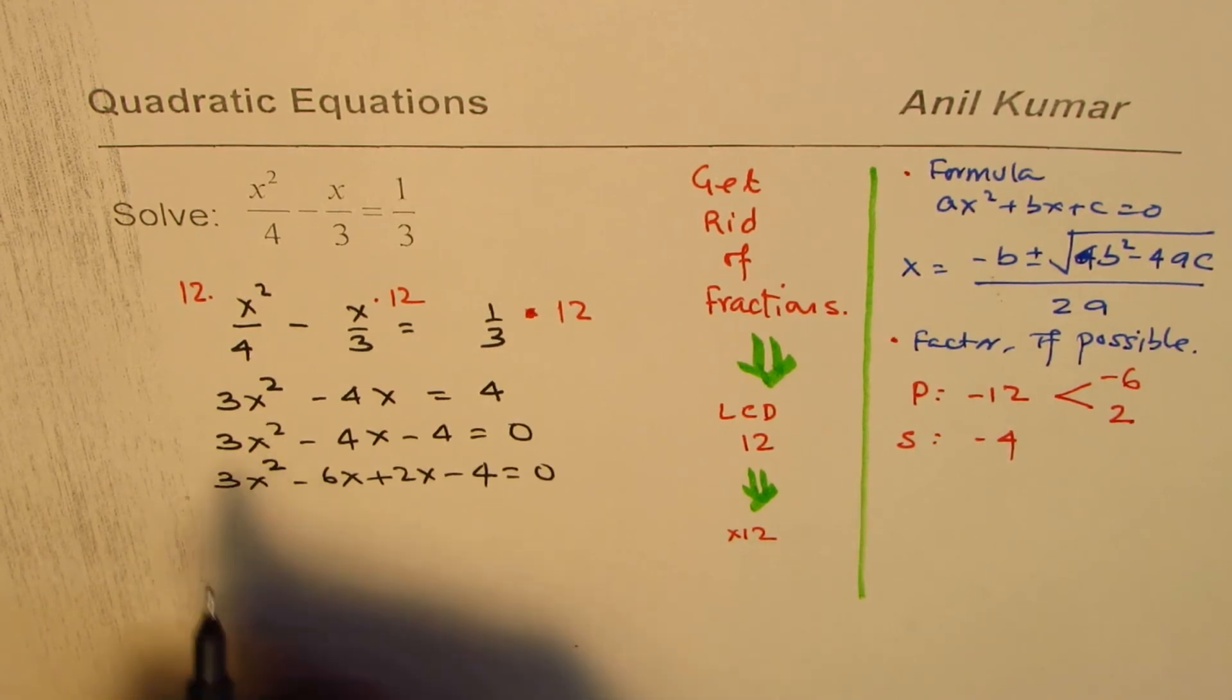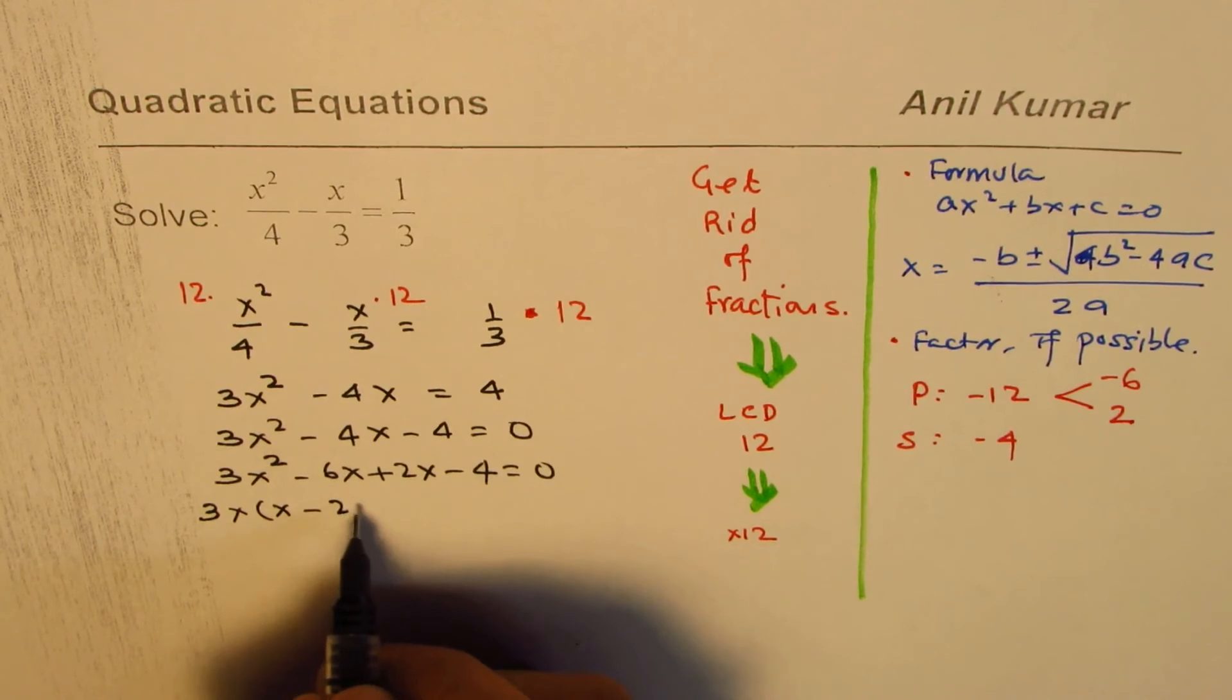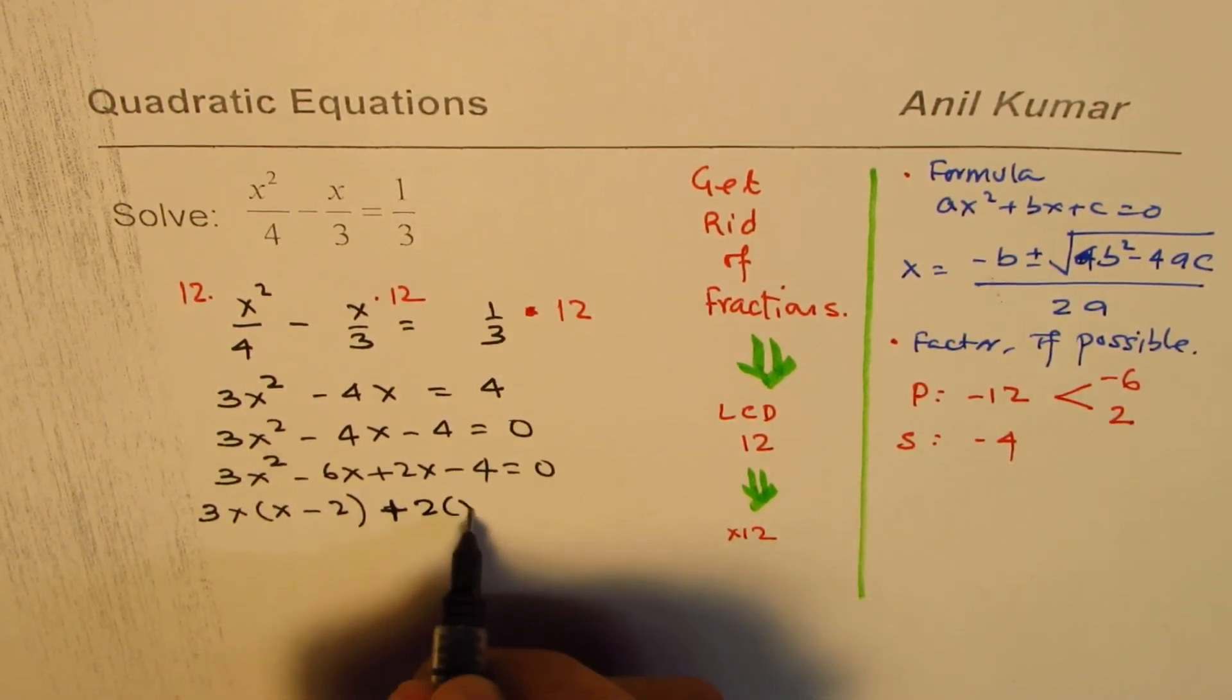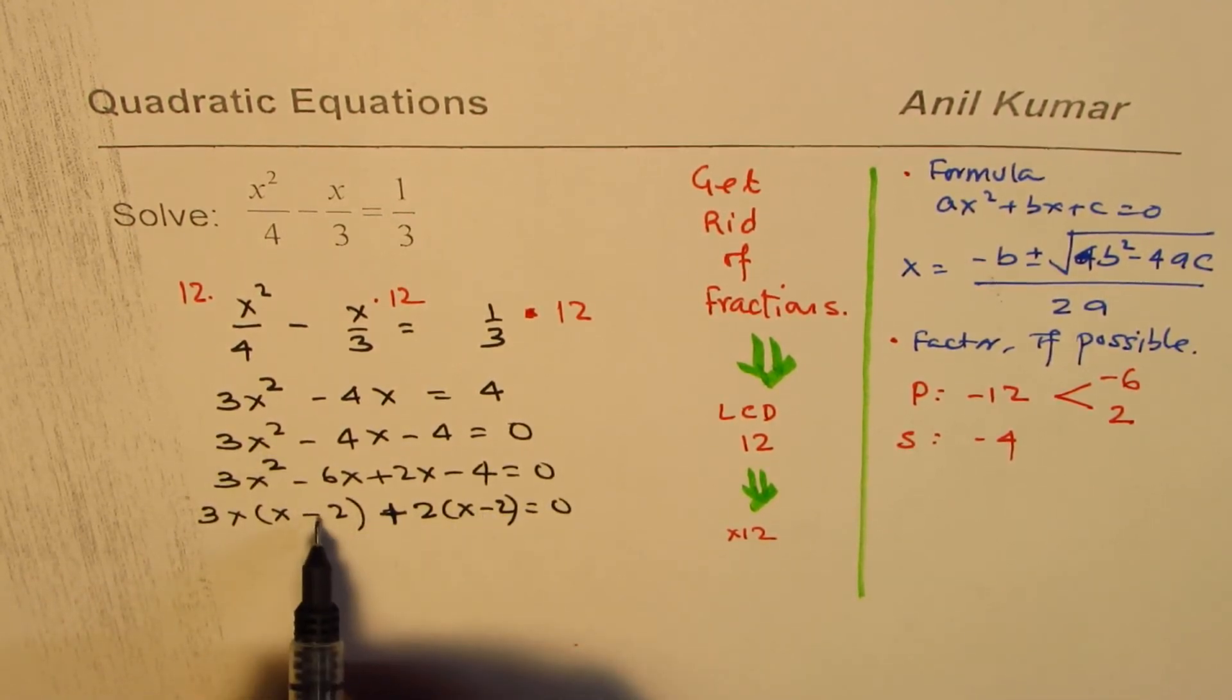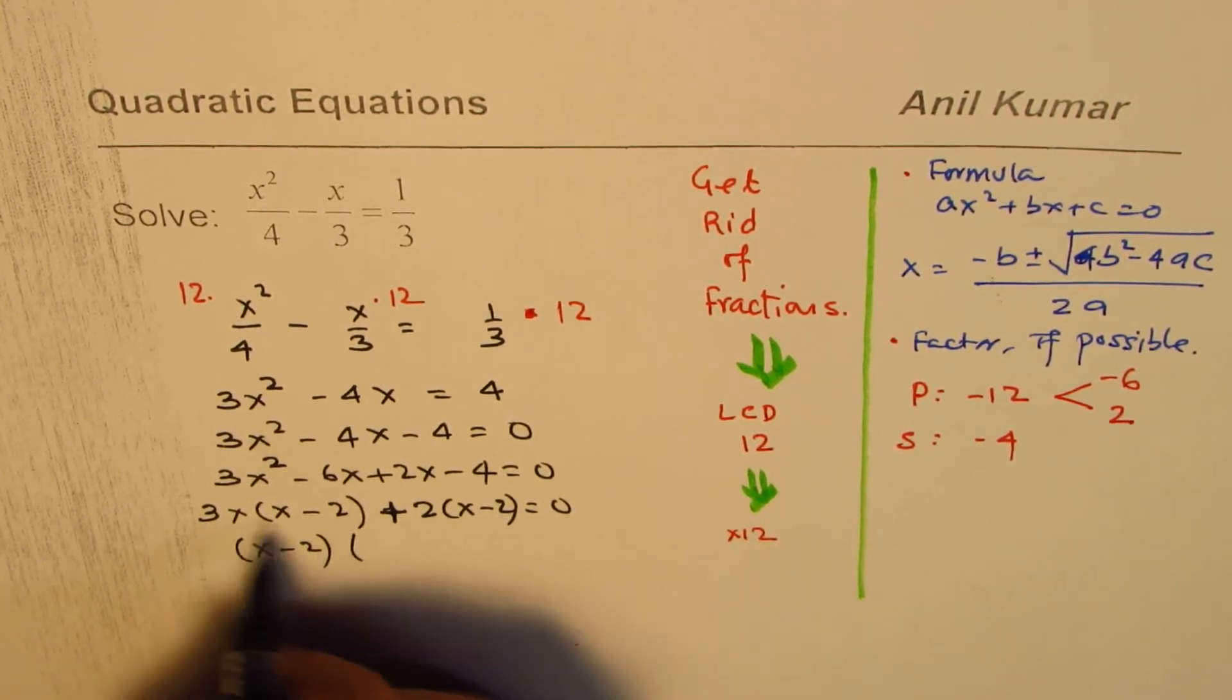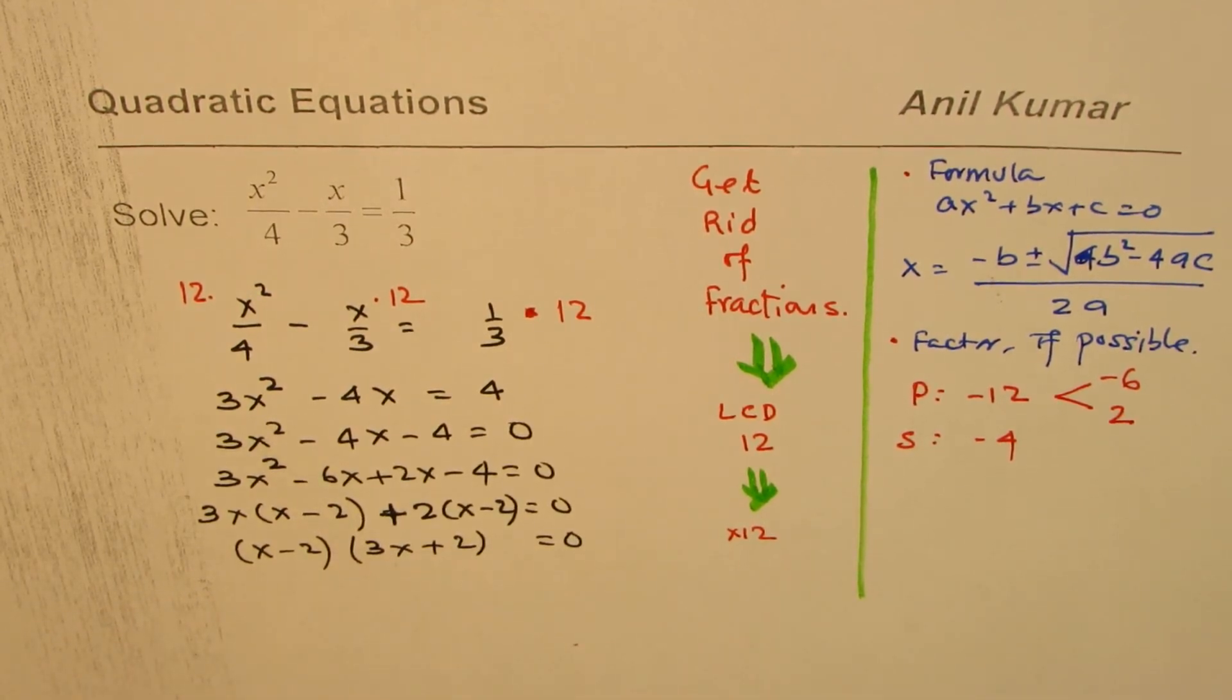Let's see what is common between the first two terms. It is of course 3x, so you get x minus 2. And here we have 2 common, plus 2 common, x minus 2. Now you should always get this as a common factor, else there is something wrong. So x minus 2 is a common factor. You get 3x plus 2 equals 0. And that gives you the solution.